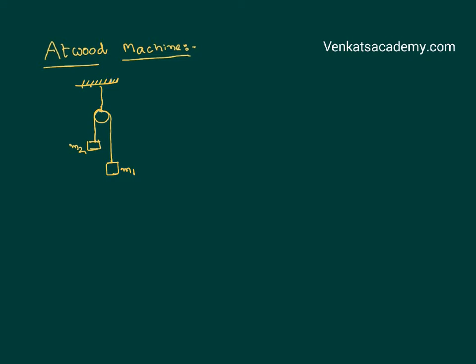An Atwood machine is a combination of two bodies connected over a pulley with a lightweight string connected to a rigid support. Let us say it is connected in such a way that M1 is greater than M2.